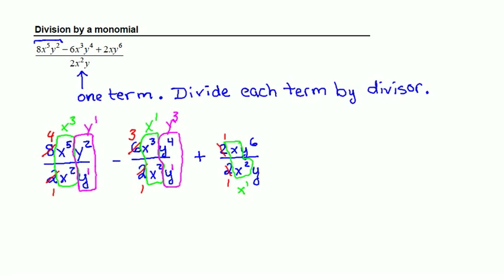And for our y's, we have y to the 6 over y to the 1. When we apply the quotient rule to that, we end up with y to the 5. Since the larger power of y is in the numerator, that's where this factor ends up.